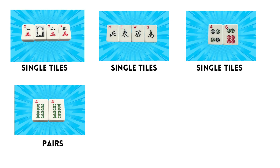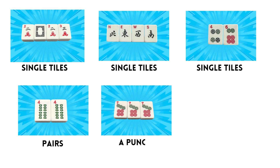The next grouping is the Pung. A Pung is three like tiles sitting next to each other, and it can be any of the tiles, including Jokers. Since you can use Jokers in a Pung, it would be acceptable to use one Joker, two, or even three.